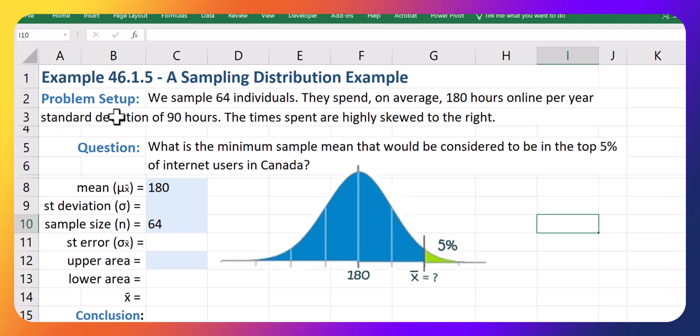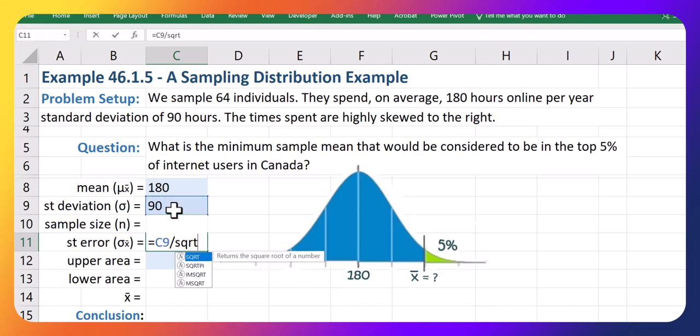Okay, now back to standard deviations. So again, the standard deviation for the hours online here is 90. And what we need to get, because we're doing stats on the sample means, we need to take that 90 and divide by the square root of the sample size, which is in C10 here. It's just hiding, but that's actually that 64. So we get a standard error of 11.25.